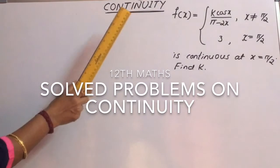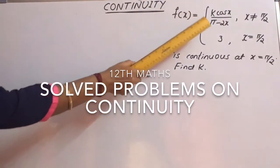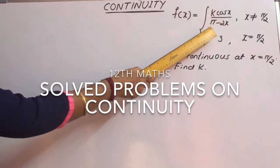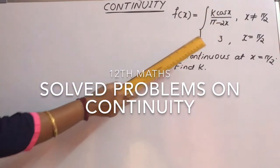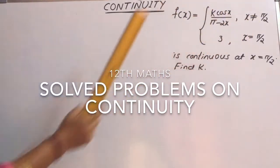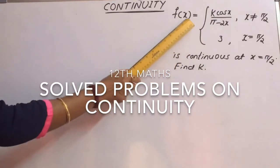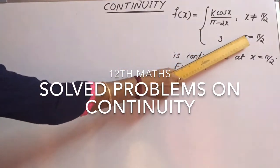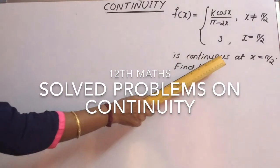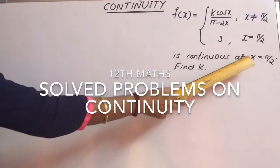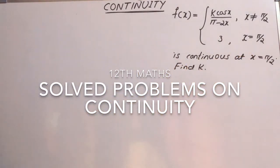Now consider the question: f(x) = k·cos(x) / (π - 2x) when x is not equal to π/2, and f(x) = 3 when x = π/2, is continuous at x = π/2. So find k.